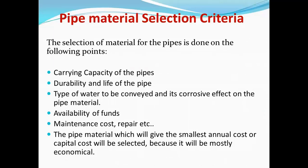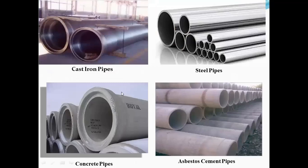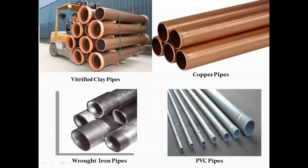Next point is availability of funds. If funds availability is less, we should prefer a less costly pipe system. If funds are more, we can go for costlier pipes. Then maintenance cost and repair: the pipe should be selected such that it has less maintenance and less repair work. Cast iron, steel, or wrought iron pipes can corrode and need to be replaced. Concrete, asbestos, or PVC pipes have lower maintenance, though PVC pipes may have leakage at joints.